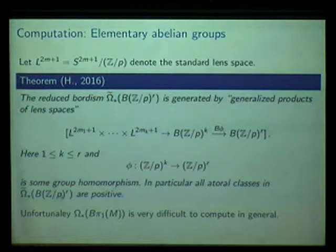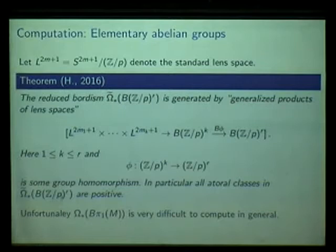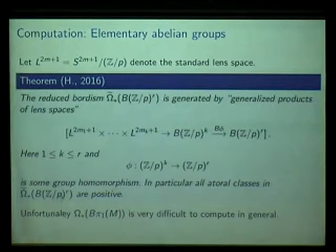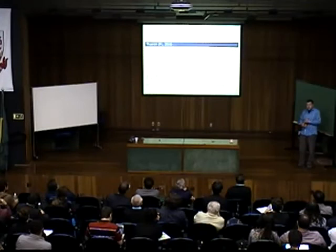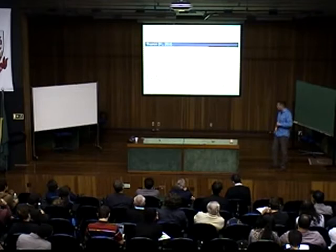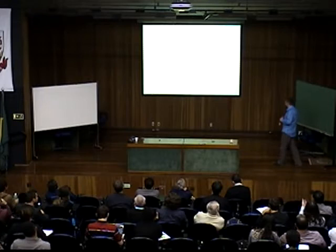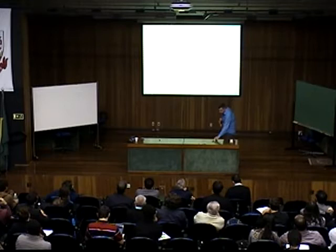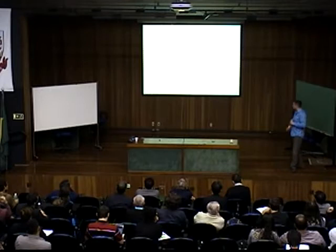This is a key point: in bordism theory we have maps from manifolds to spaces, so we immediately know what it means for the manifold to have positive scalar curvature. If we use homology, we have more general sorts of representatives — no longer manifolds, but for example singular cycles or simplices — and we have to describe what it means that these objects have positive scalar curvature. One very convenient setting is the world of manifolds with Baas-Sullivan singularities, since these are sufficient for describing homology, at least at odd primes.